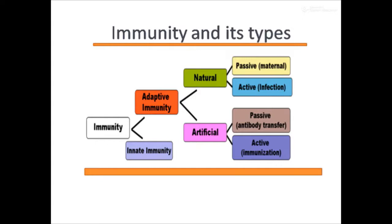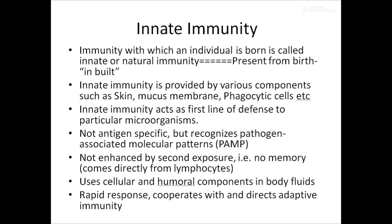Among natural methods, you can have an active exposure to an antigen when an infection occurs, or passive immunity where immunity is passed from mother to baby or fetus. By artificial means, adaptive immunity can be acquired through active immunization or passive immunization where antibody transfer is done. This is a basic outline of the different types of immunities; we will go into further details.